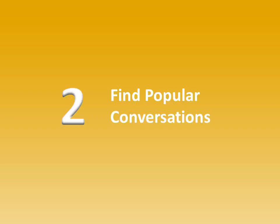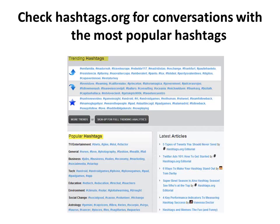The next step is to find conversations going on about a topic where you can contribute. The key is to contribute to popular conversations that more people are watching. If it's just two people going back and forth and you jump in, only those two and perhaps their few followers see it. But if someone with tens of thousands of followers starts a conversation and you jump in, all of their followers are going to see you. Check out hashtags.org to find conversations with the most popular hashtags — you can see trending hashtags and the most popular ones on different topics.